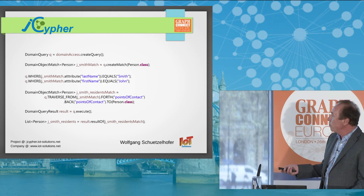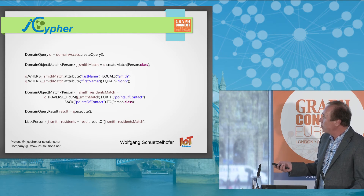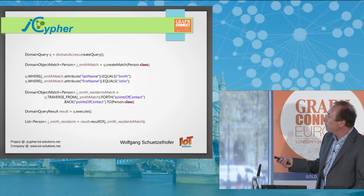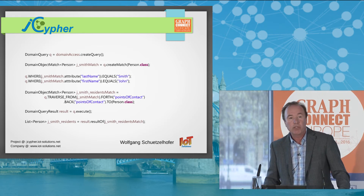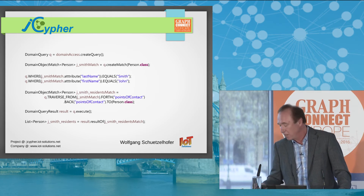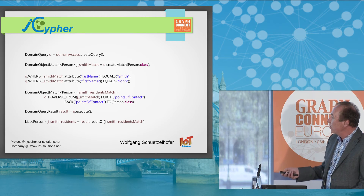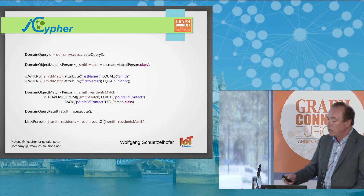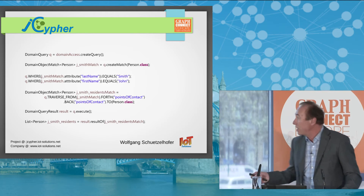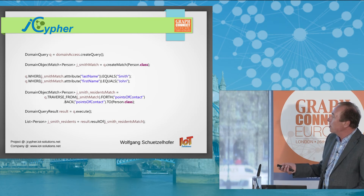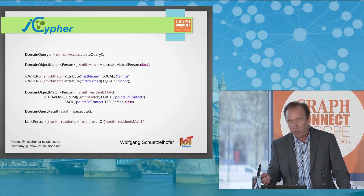What is left to do? We execute the query, and for every domain object match specified in the context of the query, we can retrieve the actual result. In our case, we retrieve a list of persons — those persons who live at John Smith's addresses. And in the entire query, we have only used concepts of our business domain, of our domain model.